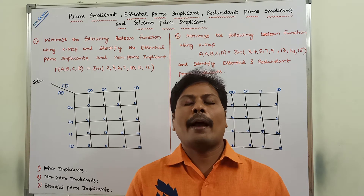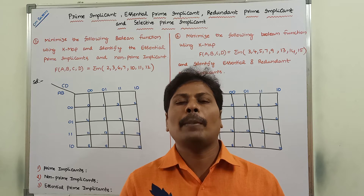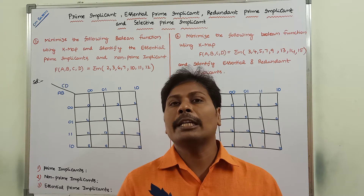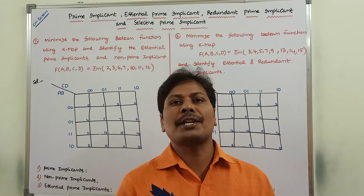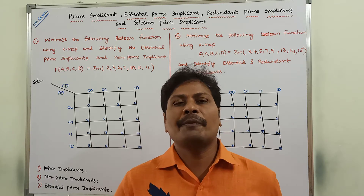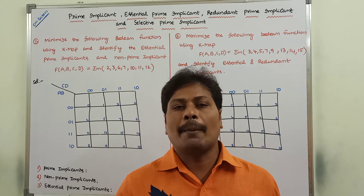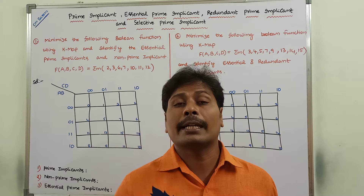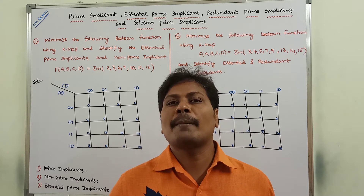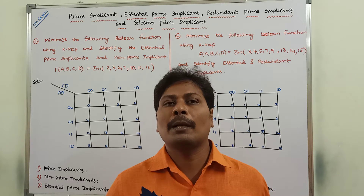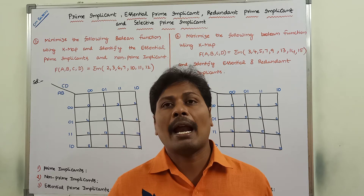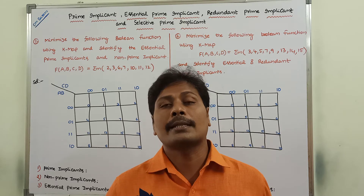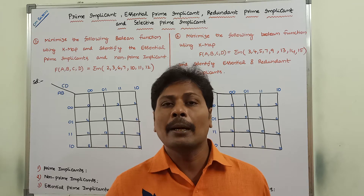Hi friends, today I am giving a lecture on an example problem on how to identify the prime implicants, essential prime implicants, and redundant prime implicants from the given boolean function using Karnaugh map. In the previous videos, we have already discussed what is a prime implicant, non-prime implicant, essential prime implicant, redundant prime implicant, and selective prime implicant. Please refer to that video for better understanding of that concept.